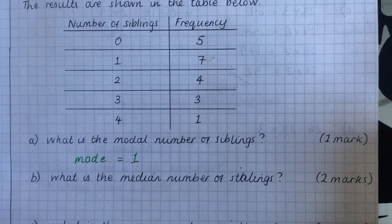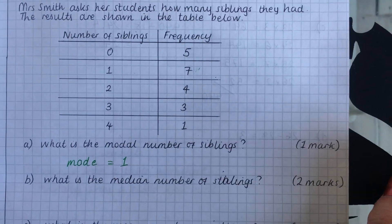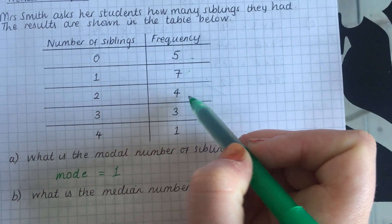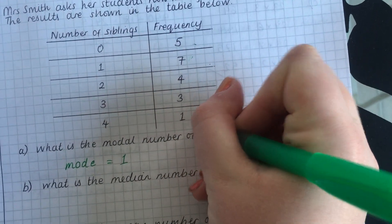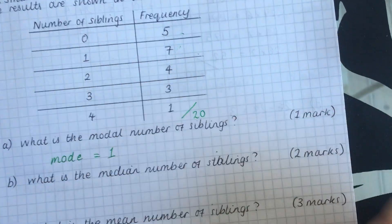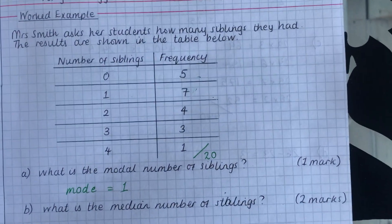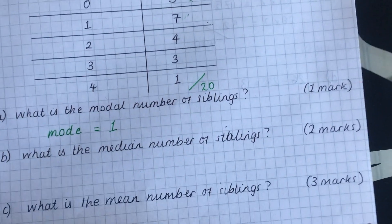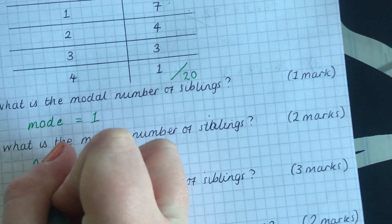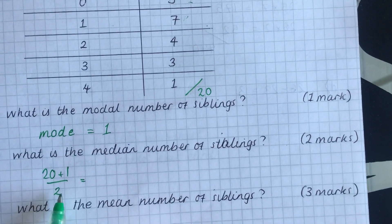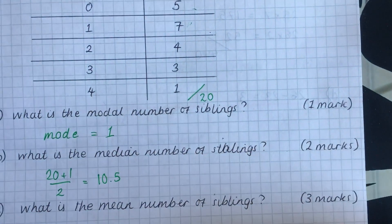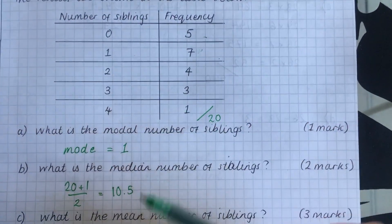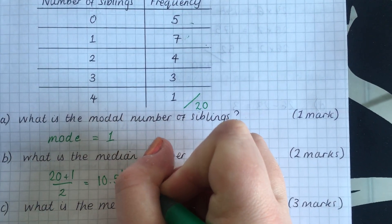Now the median using our new method, we have to do the total number of numbers plus one divided by two. So what we have to do first is add together 5, 7, 4, 3, and 1. And when you do that, you get 20. Now that's how many people were asked. Now what we have to do is follow our method, which is 20 add 1 divided by 2. So 21 divided by 2, which is 10.5. Now that's not my answer. You should know that's not your answer because there's no option for 10 siblings. So that's not your answer. That's just part of the working out. We're actually looking for the 10.5 value.